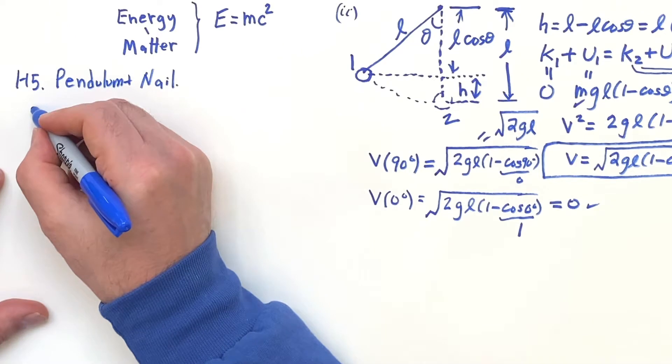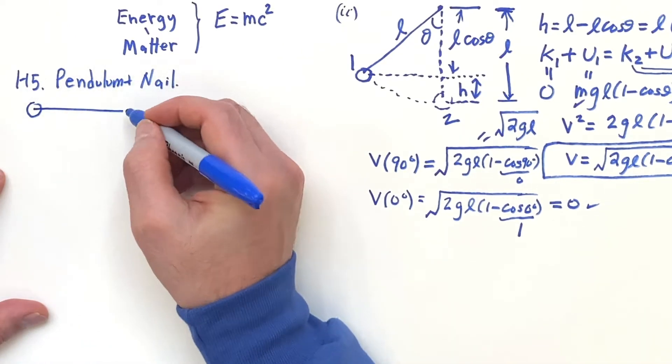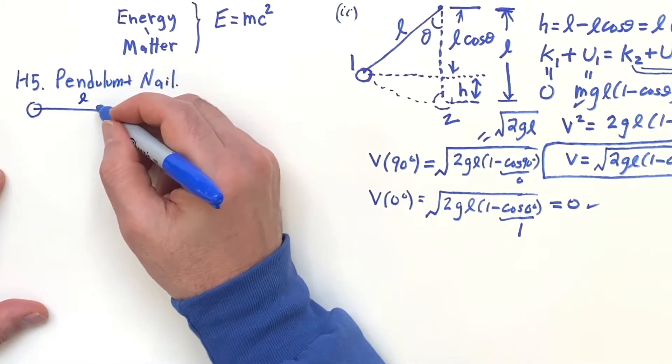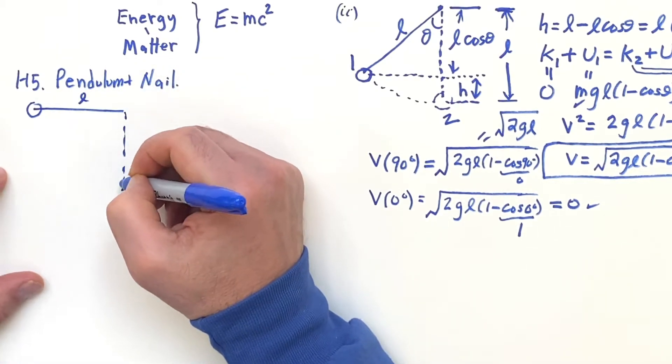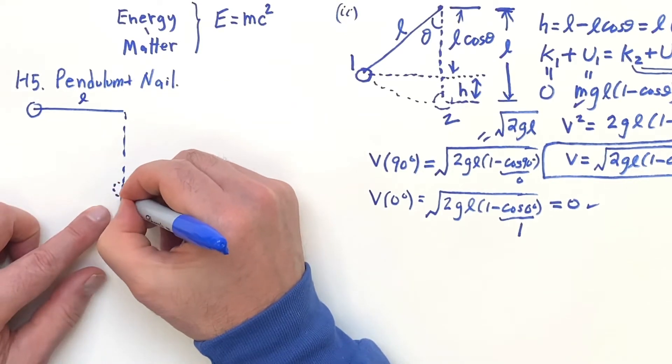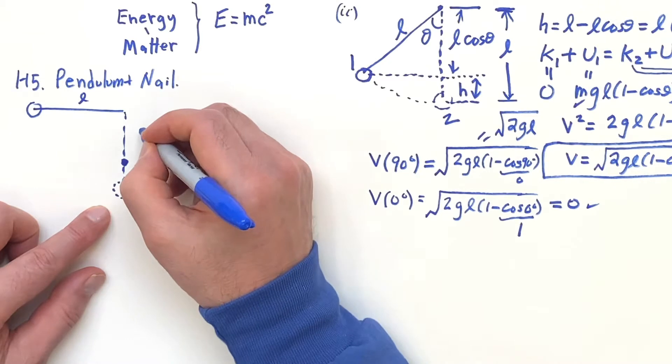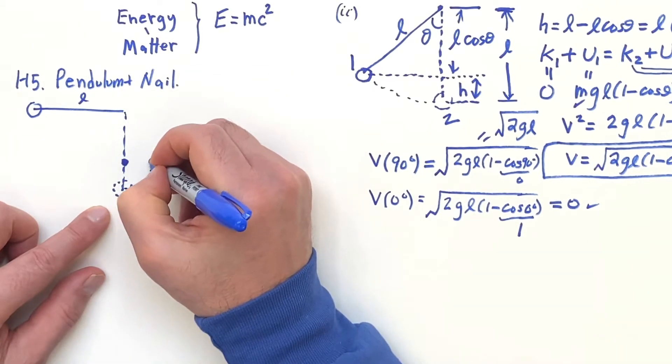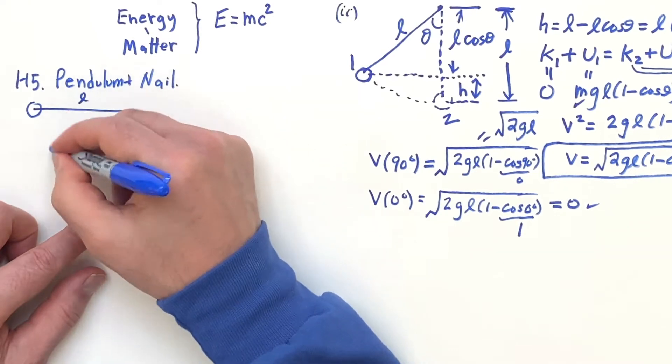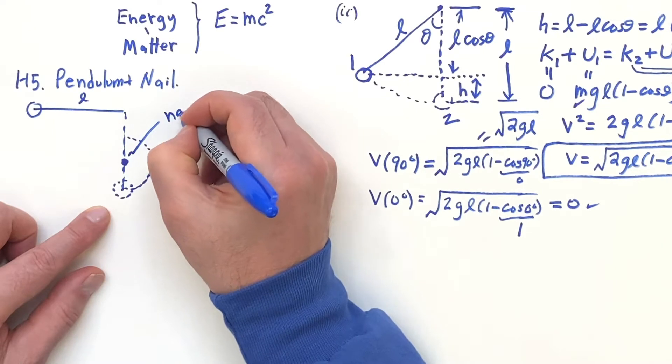What happens here is you have the same kind of pendulum arrangement with length L, and you're going to release the ball. And here, when it gets down to the bottom, though, there's going to be a nail here. We're going to have a nail, and then this is going to arc around, like it's going to wrap around this nail.